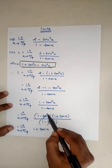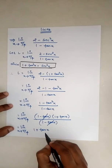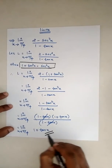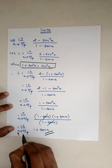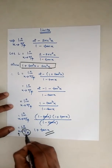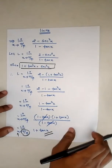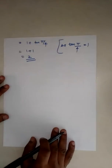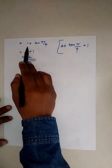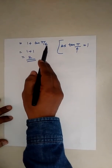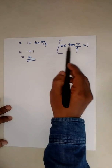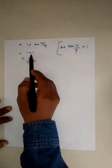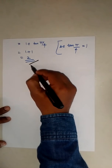The (1 - tan x) terms cancel. Now we have only (1 + tan x). Substituting x = π/4: 1 + tan(π/4). Since tan(π/4) = 1, we get 1 + 1, so the final answer is equal to 2.